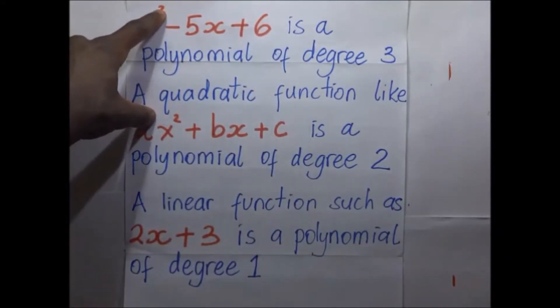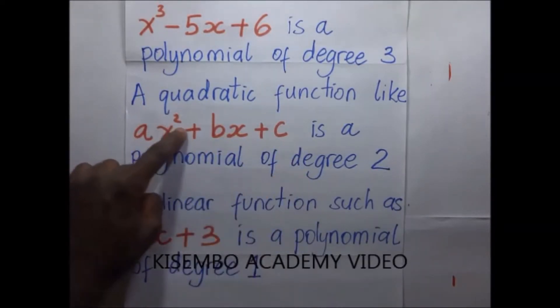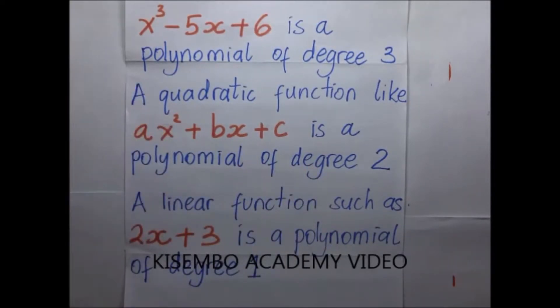ax² + bx + c is a polynomial of degree 2. And polynomials of degree 2 are what we actually called quadratic equations. Then a linear function is a polynomial of degree 1.